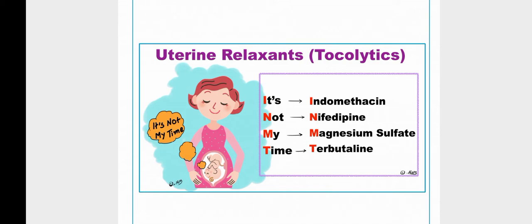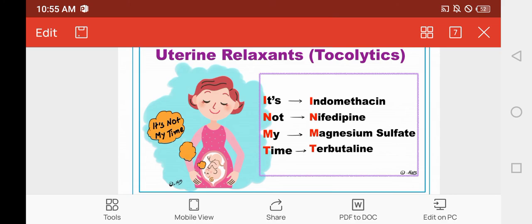Next is magnesium sulfate, which has many clinical applications; its GI pharmacology will be studied separately. Next is terbutaline. A useful mnemonic for beta-2 agonists is ATM: A for albuterol, T for terbutaline, M for metaproterenol. These are beta-2 receptor agonists also used as first-line agents in acute asthma. Terbutaline is used as a tocolytic via this beta-2 agonist mechanism.